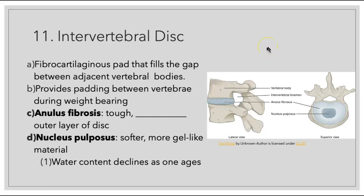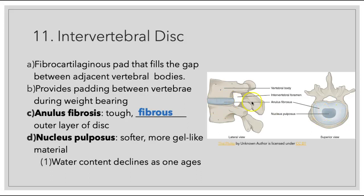Now let's discuss what's sitting in between those vertebrae. We have the intervertebral disc, which is a fibrocartilaginous pad that fills the gaps between the vertebrae by sitting between the vertebral bodies, providing padding during weight bearing. There are two different parts: the annulus fibrosus, which is the tough fibrous outer layer of the disc, and the nucleus pulposus, the inner portion that is softer and made up of a gel-like material. Unfortunately, water content is going to decline as we age and these will shrink, causing us to become shorter.